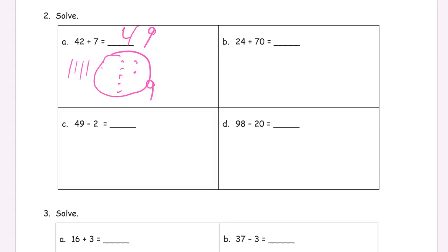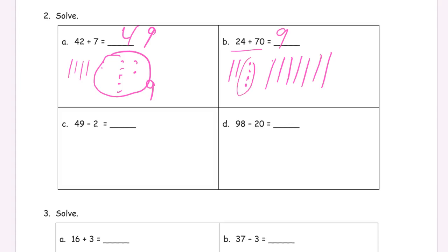And this 24 plus 70: 10, 20 — one, two, three, four ones. And then the 70 is seven tens: one, two, three, four, five, six, seven. Now count all the tens first — that's 90. And then we still have these four ones. 94.